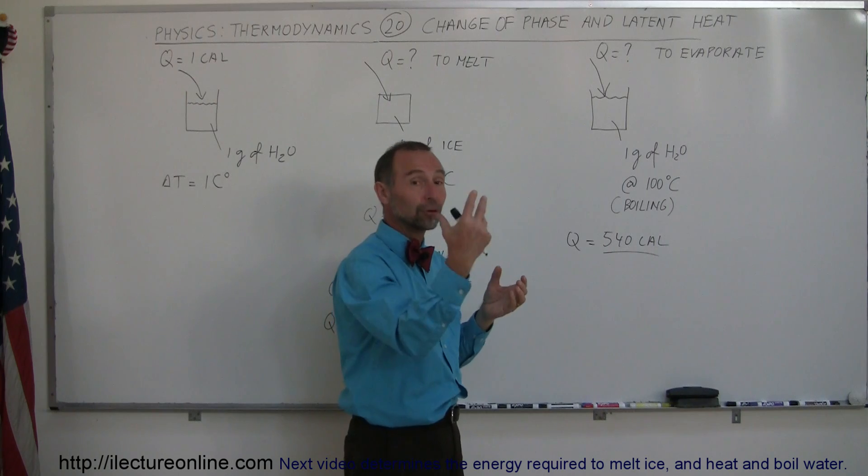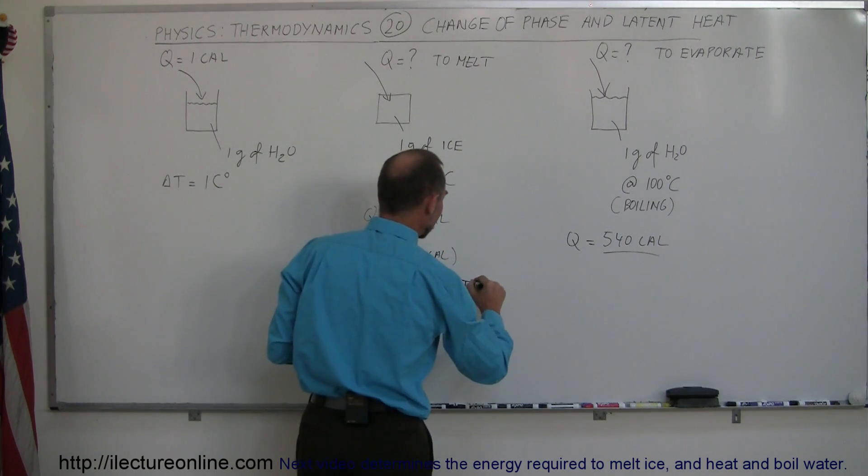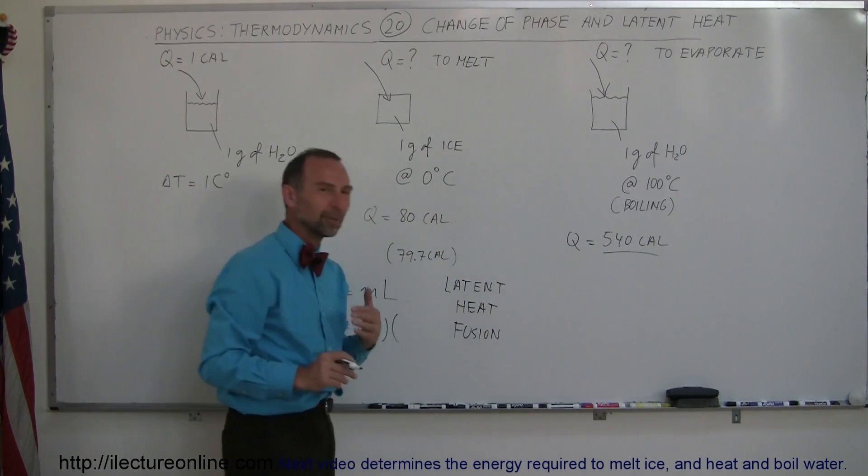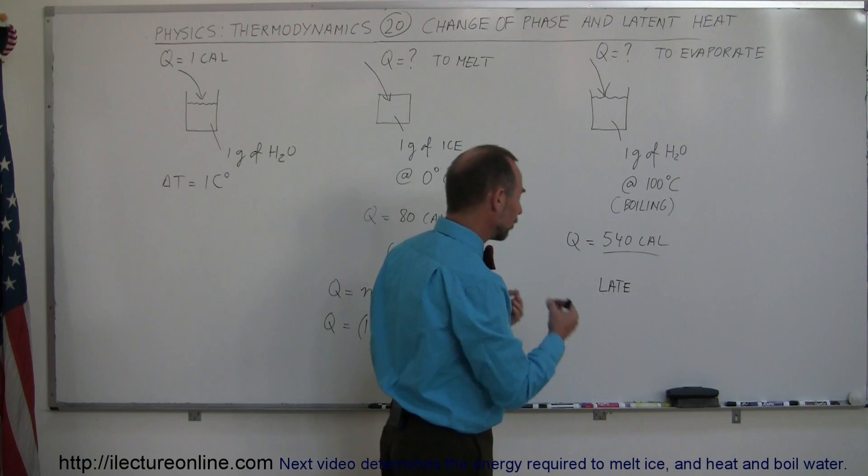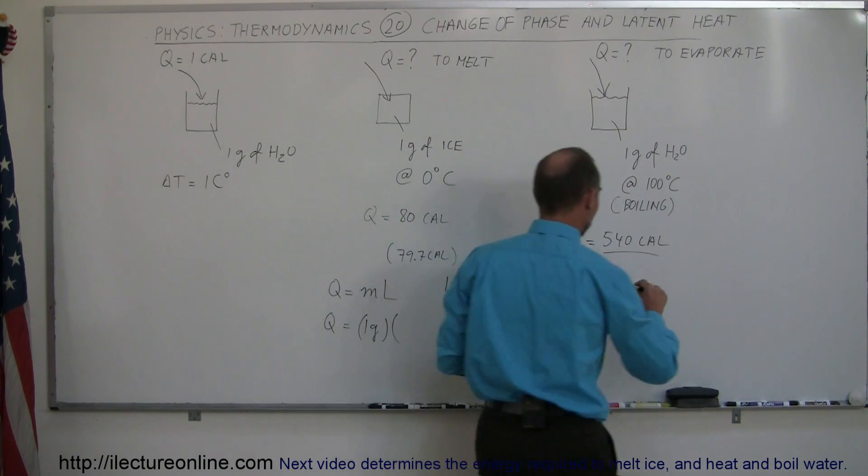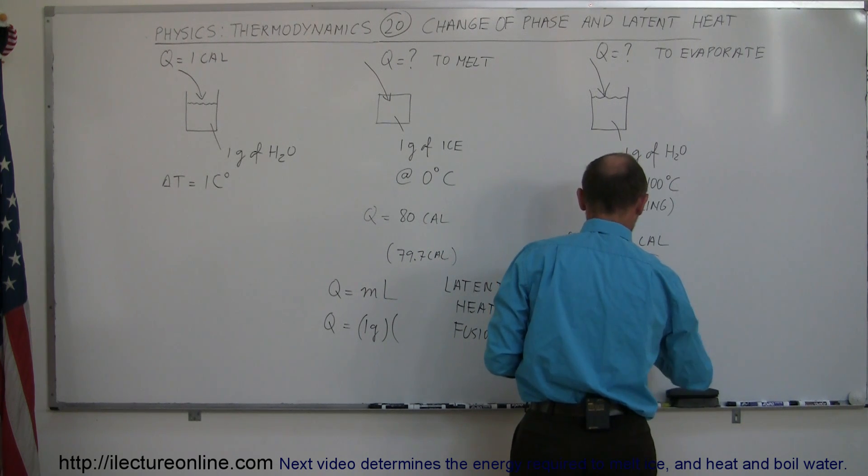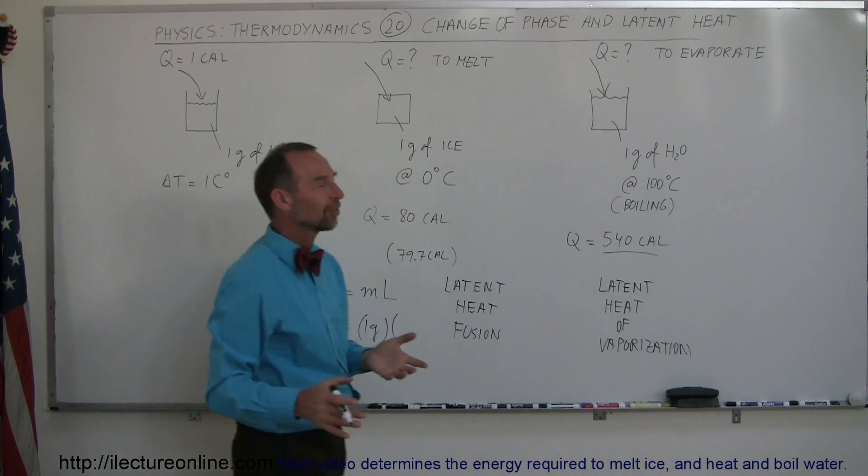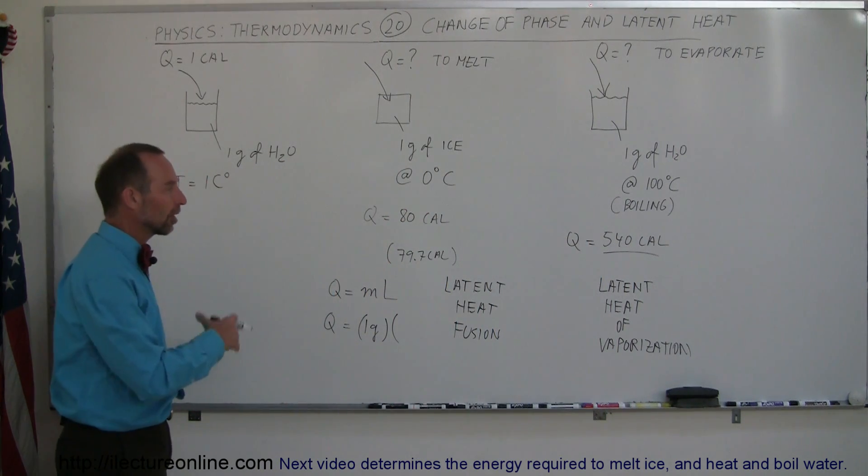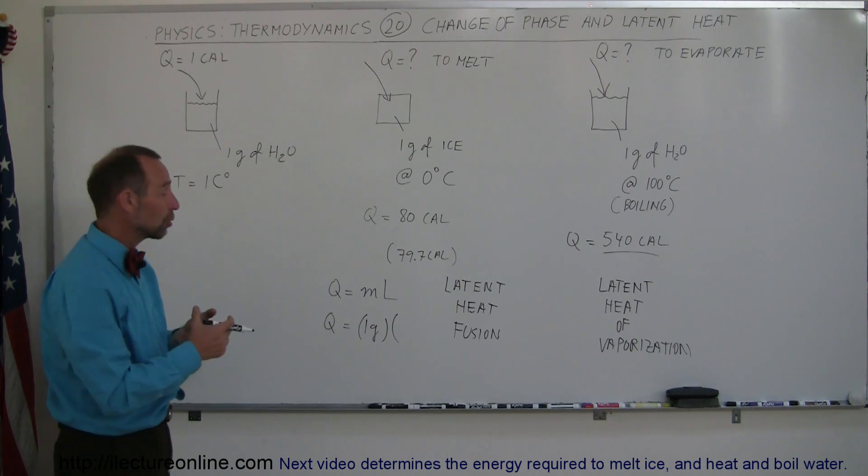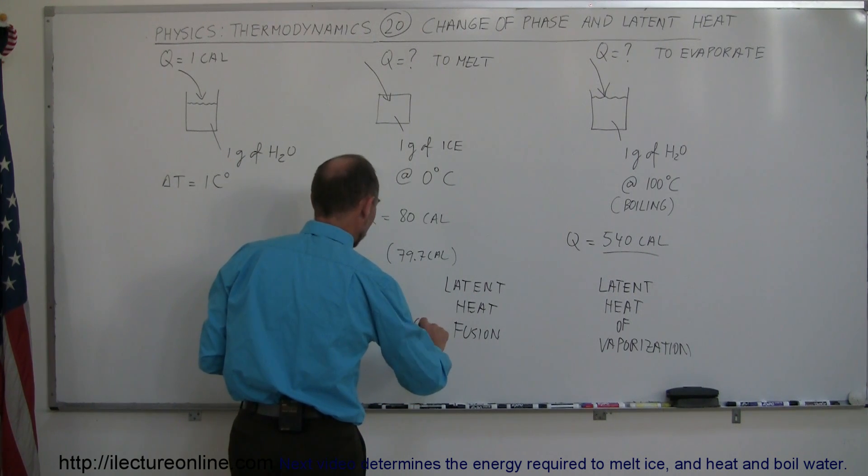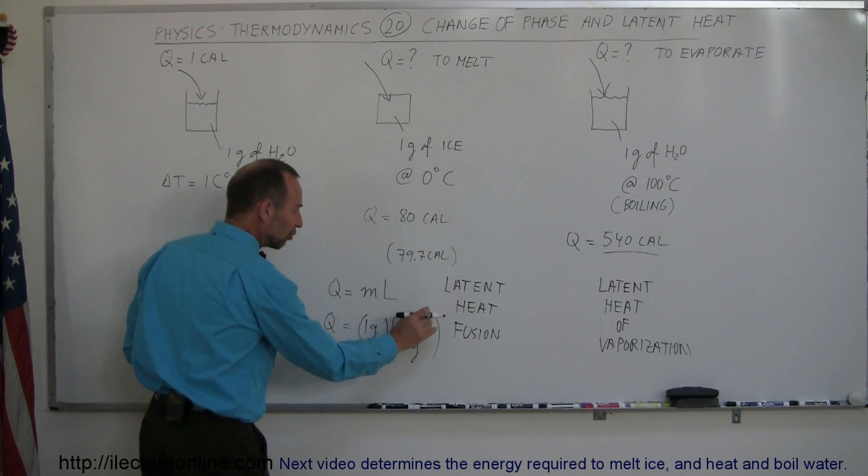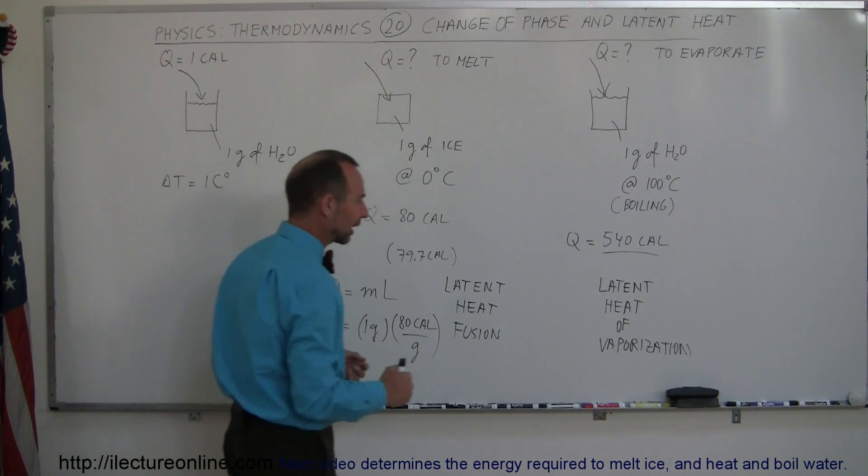This is called latent heat of fusion, indicating going from liquid to solid. This is called latent heat of vaporization, meaning going from liquid to gas phase. Latent heat of fusion and vaporization are found in all substances. This would be equal to 80 calories per gram. Notice the units are energy per gram - the grams cancel out and you're left with calories.